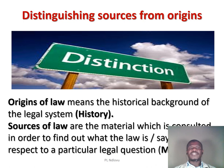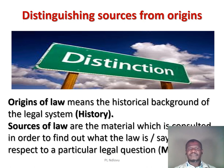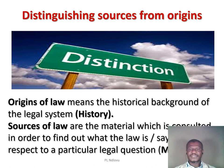We need to distinguish sources of law from origins of law. When we talk about origins of law, we are referring to the historical background of the legal system — that's the history of the legal system. Meanwhile, when we talk about sources of law, we are concerned with the material which one has to consult in order to find out what the law is, or to find out the legal position in respect of a particular legal question. That's what we mean by sources of law.